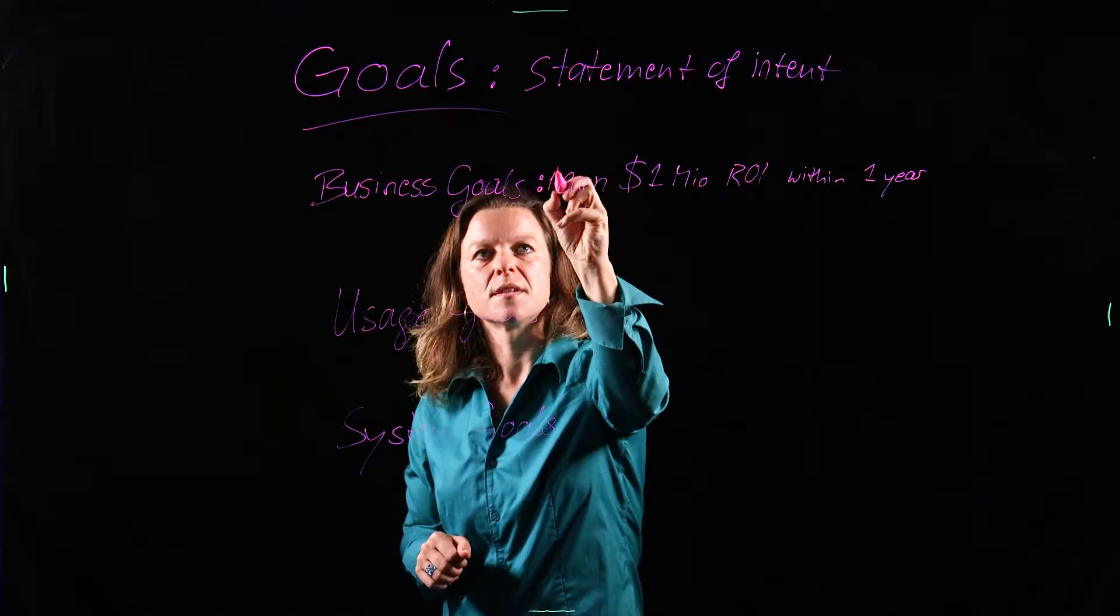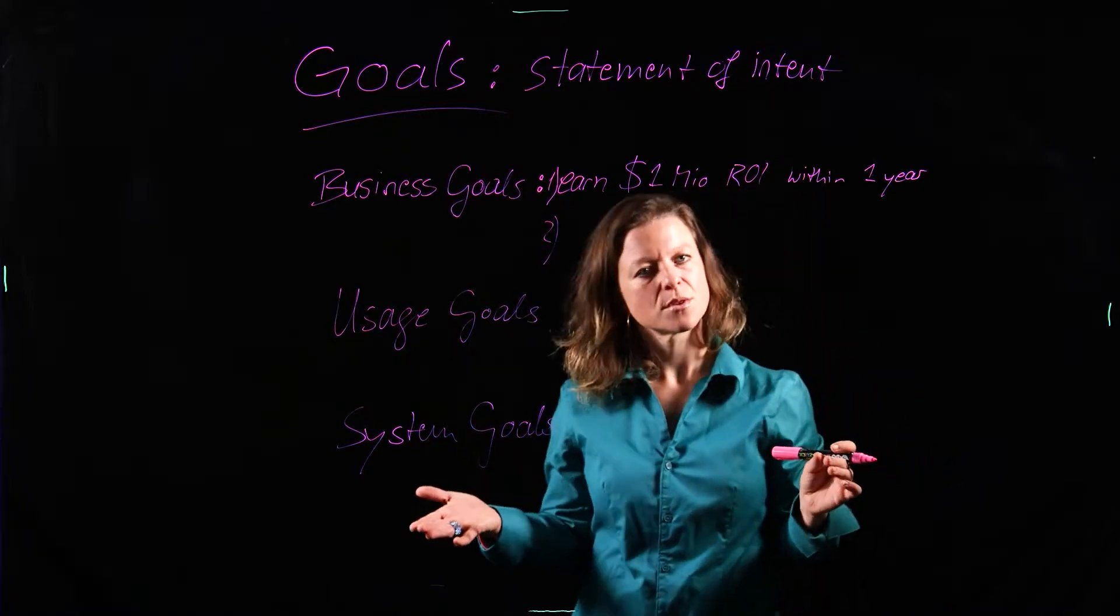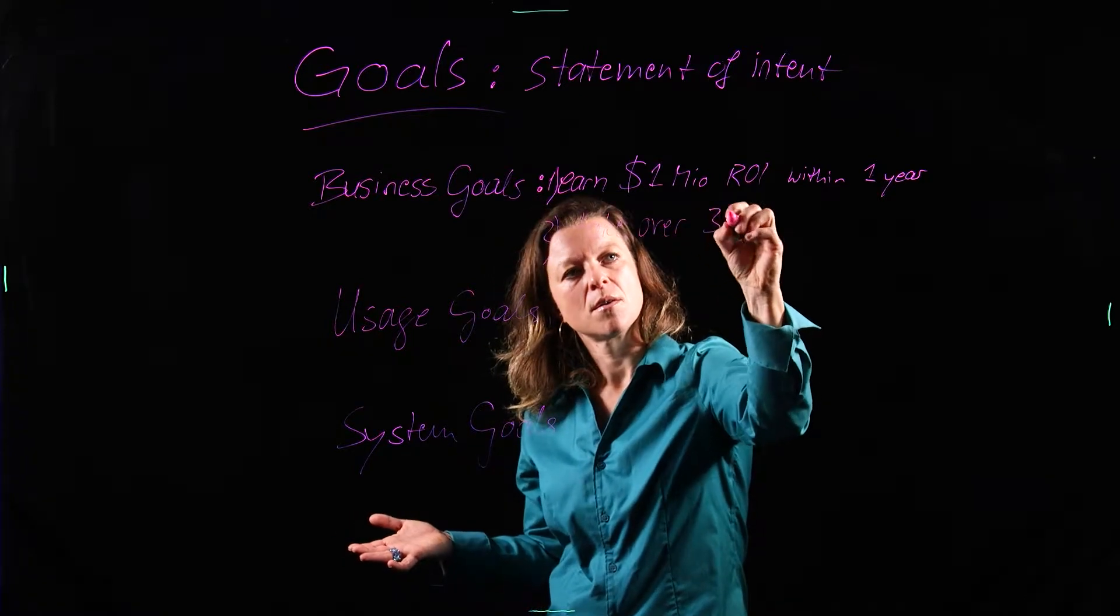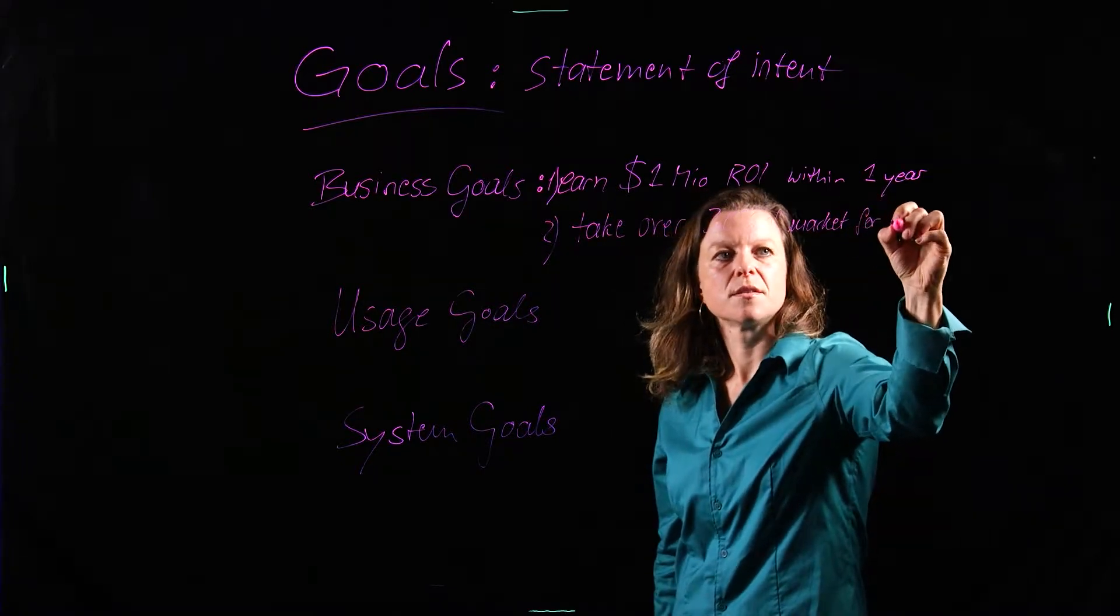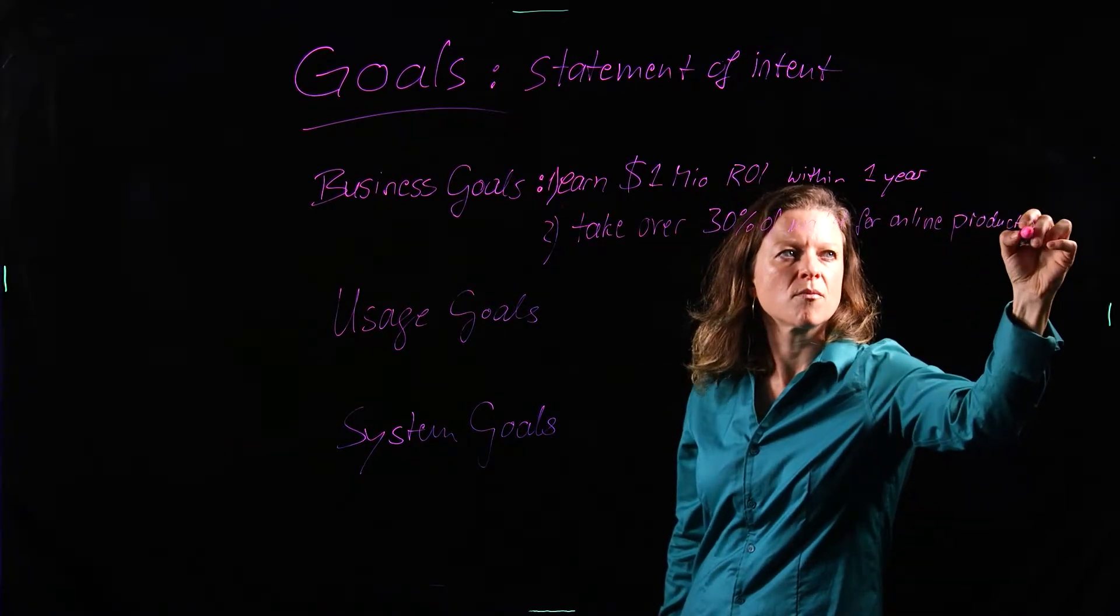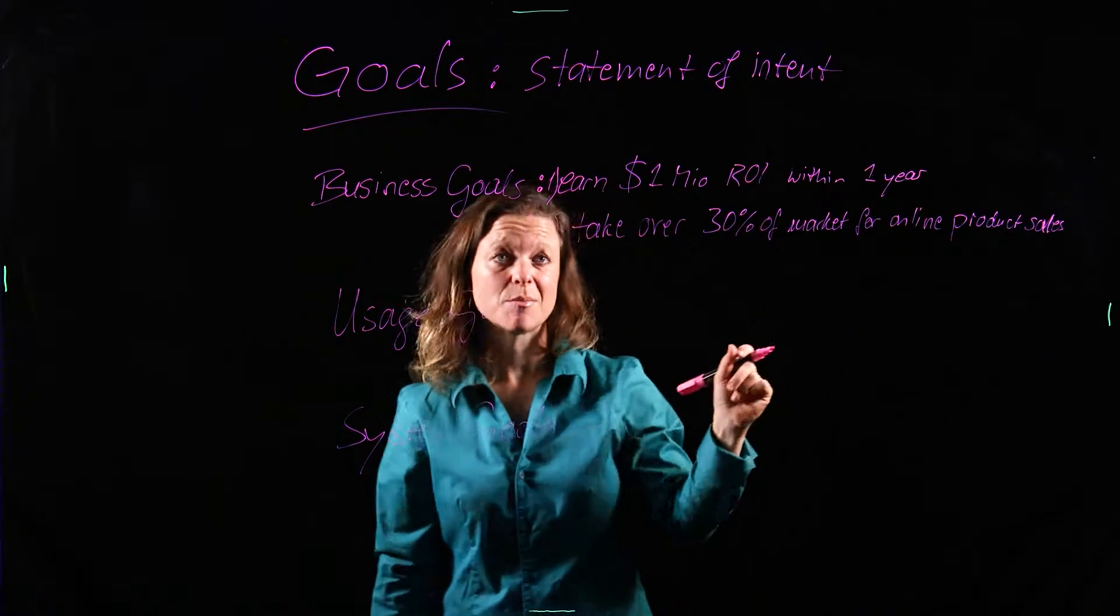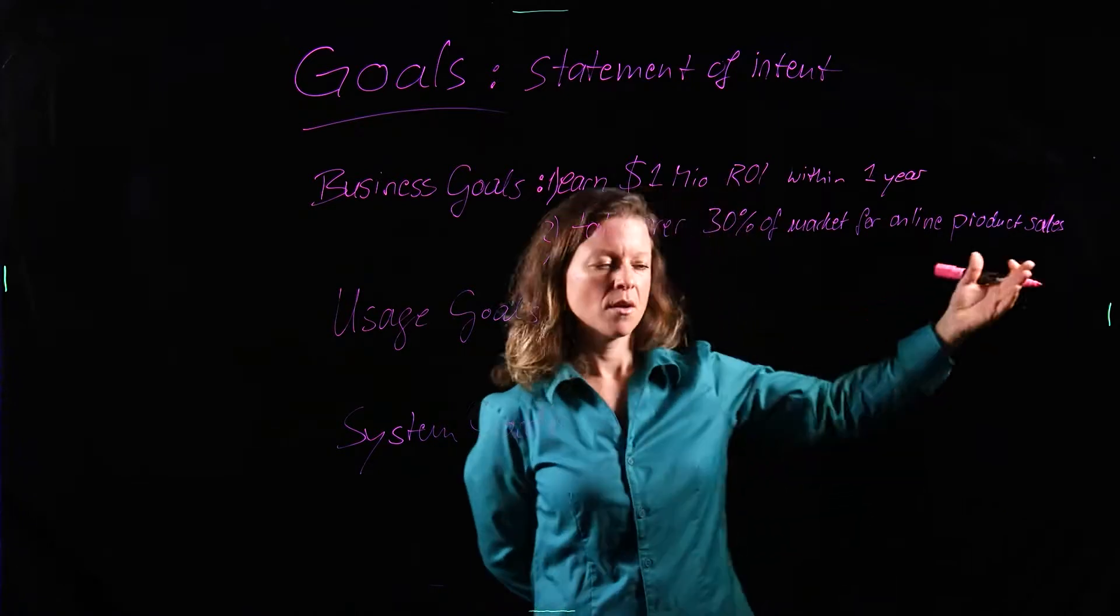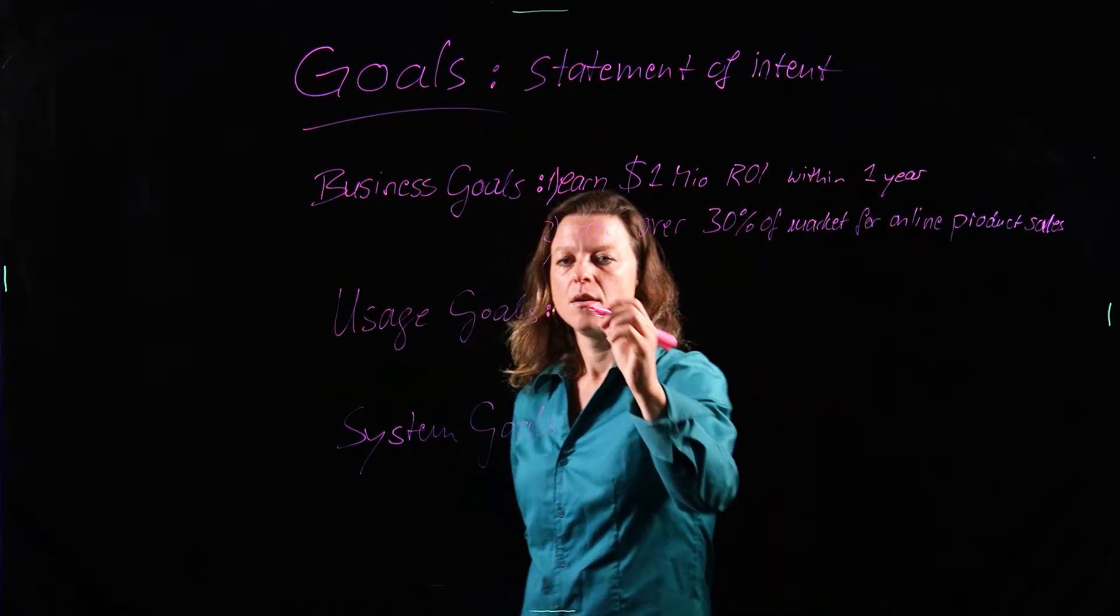So let's use a second example. Something that does say what the system is going to be about. So we want to take over 30 percent of market for online product sales. That is a pretty lofty goal. It's just an example. So we do want to do online product sales. We want to be a major competitor for Amazon, because right now they're clearly number one.